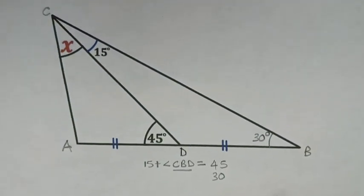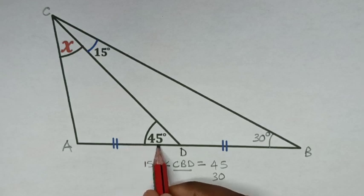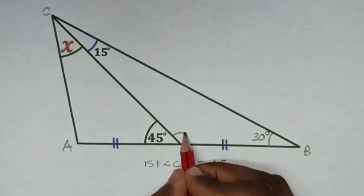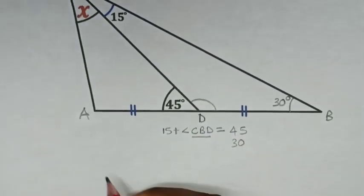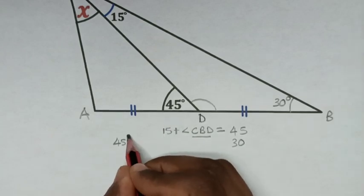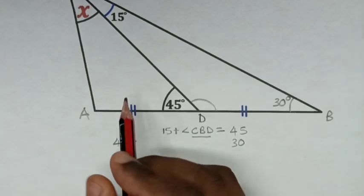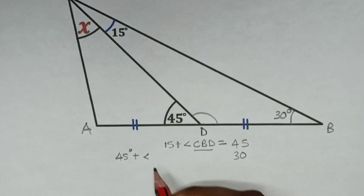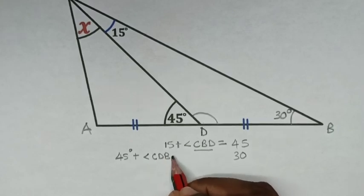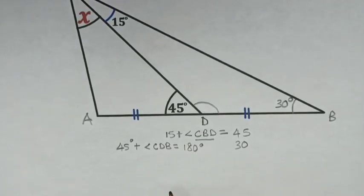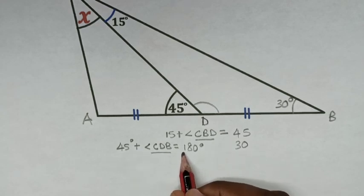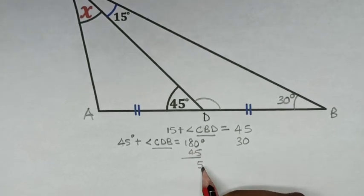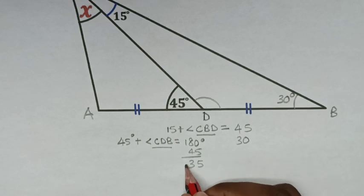Then in the next step, from this straight line angle which is 180 degrees, angle CDB is equal to 180 degrees. So to find this angle: 180 minus 45 is 135 degrees.